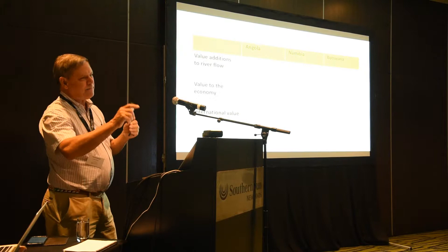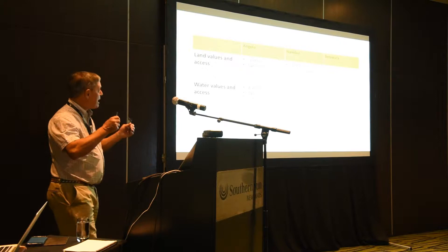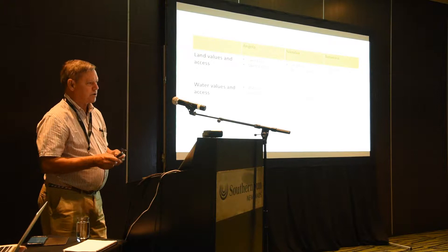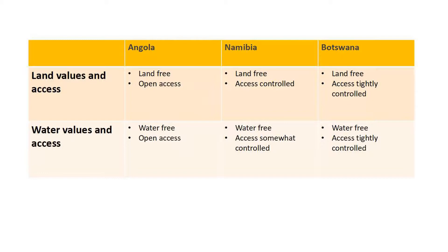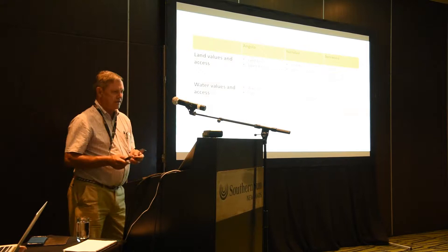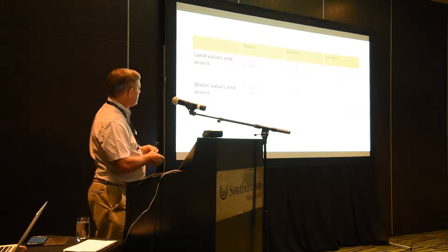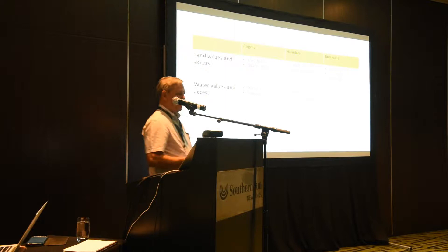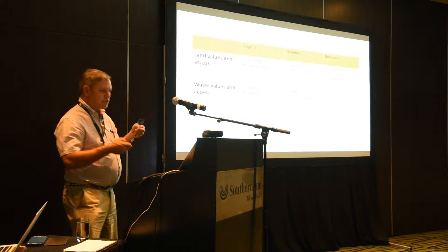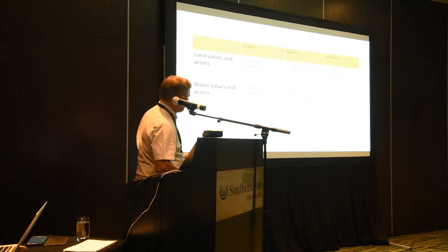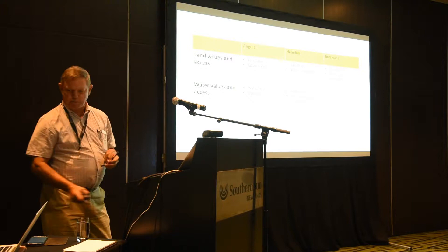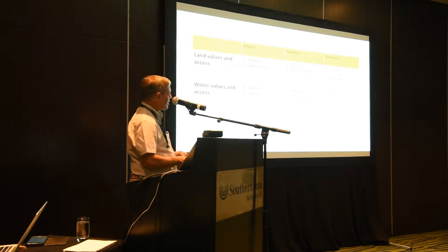In terms of policy observations on land and water in the Kubango: in Angola, land is generally free and open access. In Namibia, access is much more controlled by traditional authorities. In Botswana, access to land is much more tightly controlled through land boards. Much the same for water: it's free and open access in Angola; in Namibia the water's free but permitting systems exist; in Botswana, water is free but access is tightly controlled. These are important differences between the countries in how they manage and see the Okavango basin.